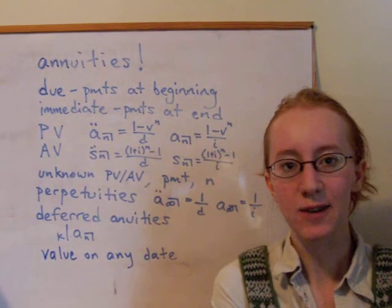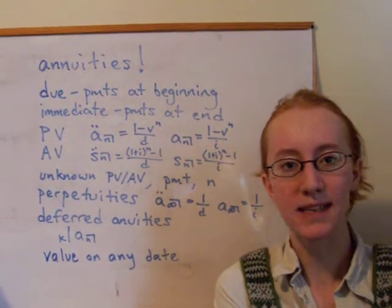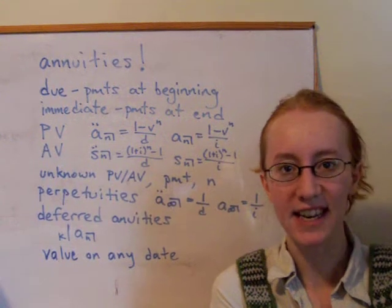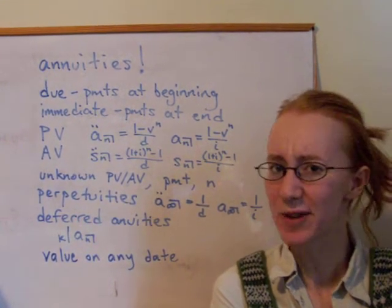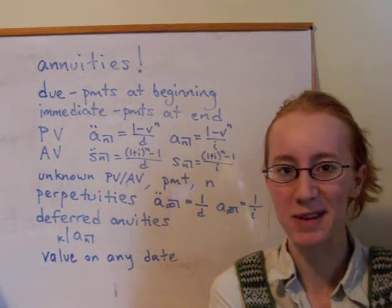So there's two kinds of annuities. Annuities due are ones where the payment is made at the beginning of each time period, and immediate annuities are ones where the payment is made at the end of each time period. Kind of confusing, it seems backwards, but that's what the terminology is.